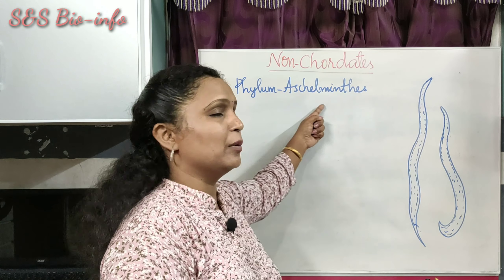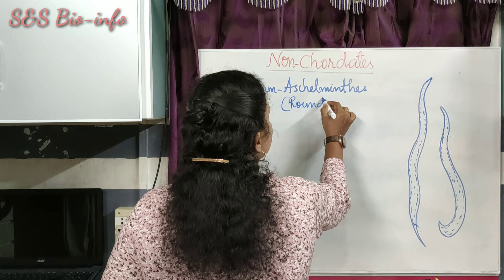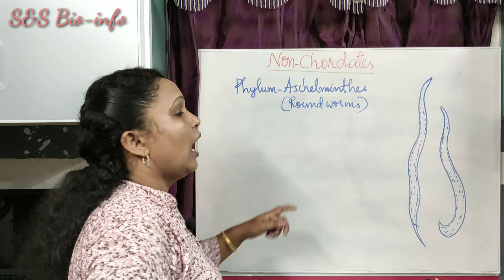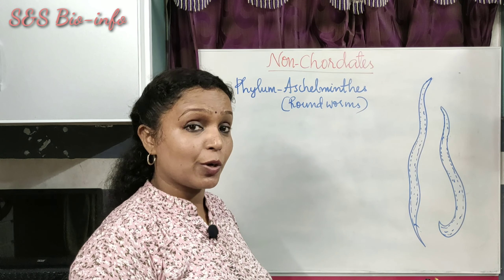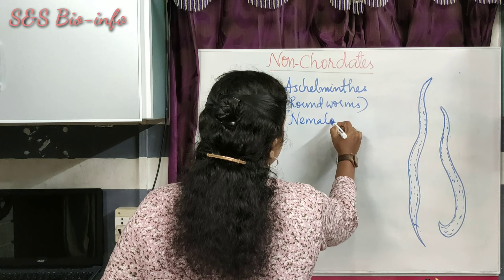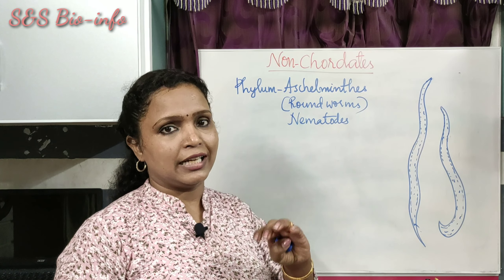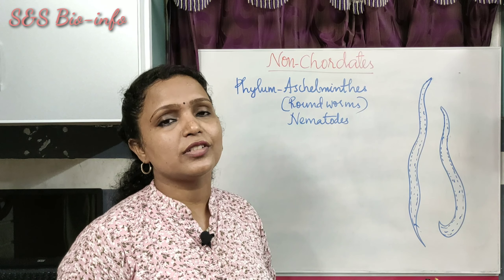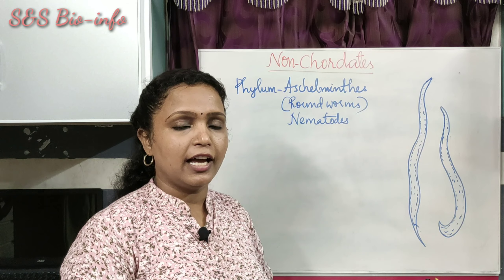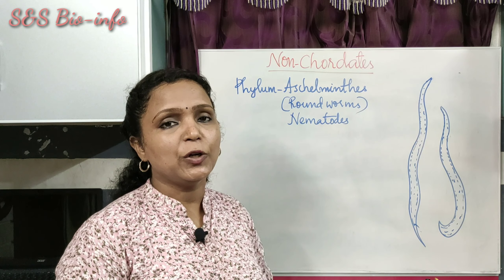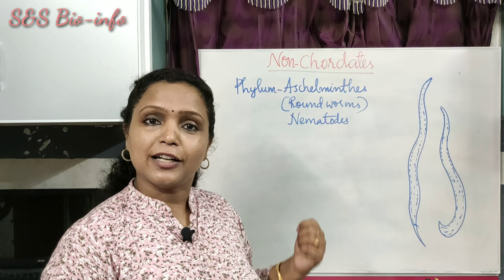The next phylum is Aschelminthes, which means round worms. Their body is elongated and cylindrical in appearance; they are also known as nematodes. Their habitat includes aquatic and terrestrial environments, and they are also found inside and outside the body of animals — so some of them are parasitic in nature, most being endoparasites like Platyhelminthes.